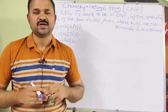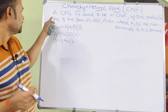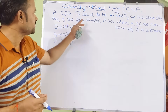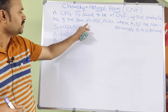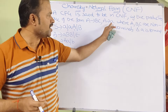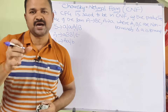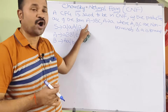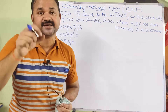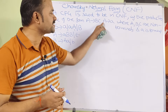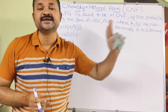Now let us discuss Chomsky Normal Form, in short CNF. A context-free grammar (CFG) is said to be in Chomsky Normal Form if its productions are of the form A produces BC, or A produces a, where A, B, C are non-terminals and small 'a' is a terminal. If a non-terminal produces two non-terminals, or a single terminal, then the production is in CNF.